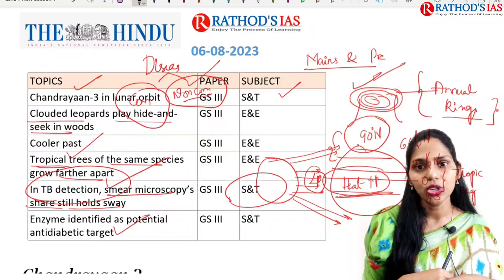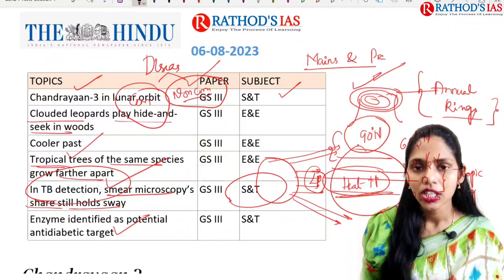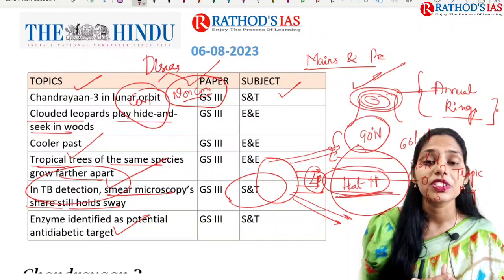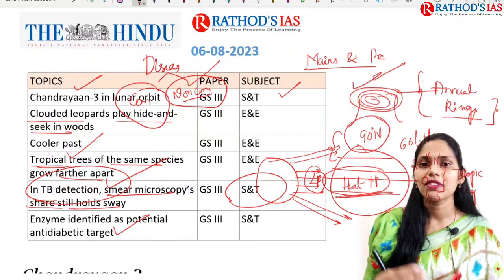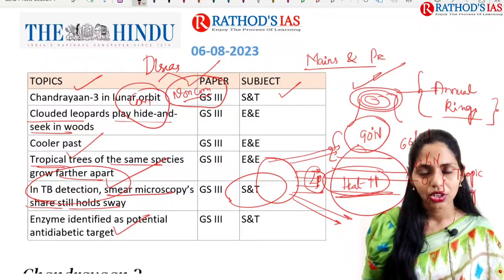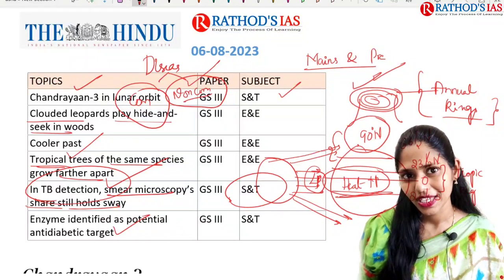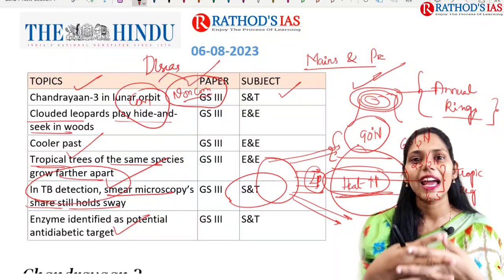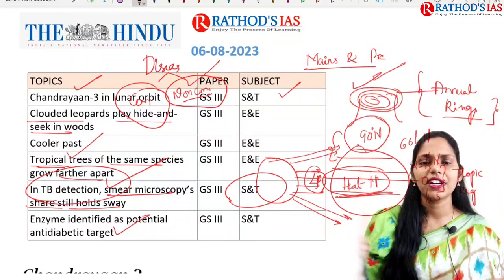Diabetes is a non-communicable disease. In our gut — from mouth to anus, the gastrointestinal system — millions of microbes are present. Some bacteria produce enzymes, and these enzymes have antibacterial target properties. This gut bacteria is also very helpful for secretion of vitamin K, absorption, and digestion. They are also having an anti-diabetic target. This topic is important from science and technology under GS paper 3.